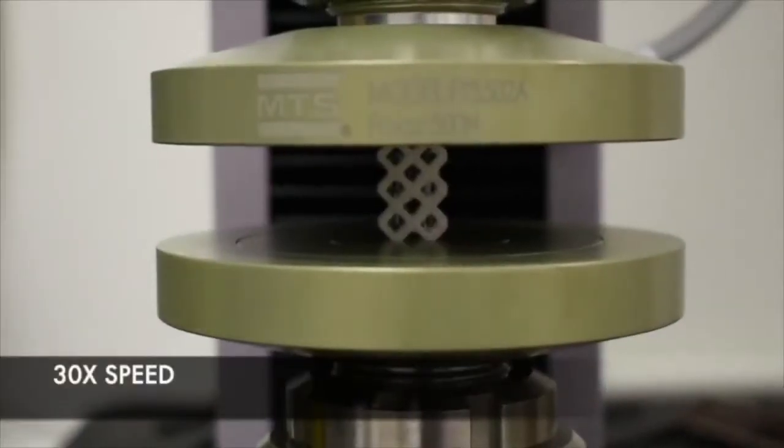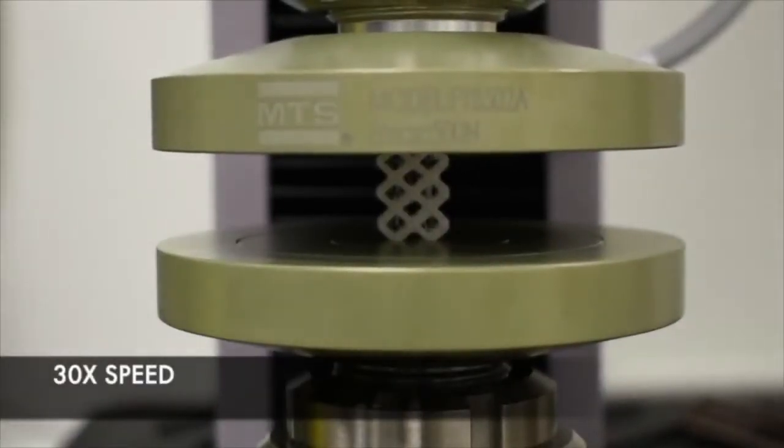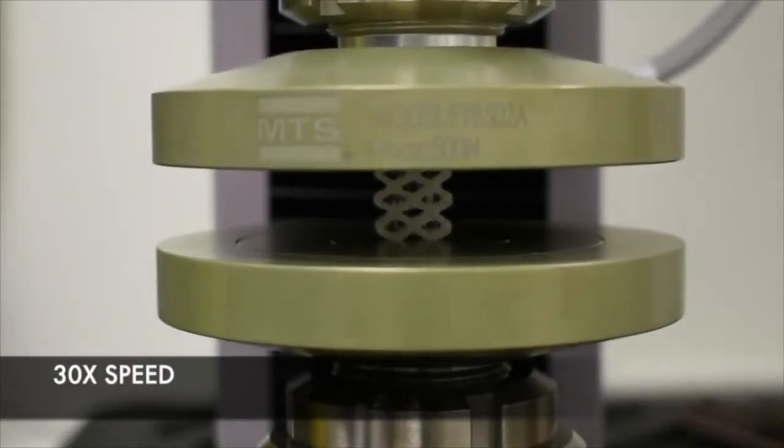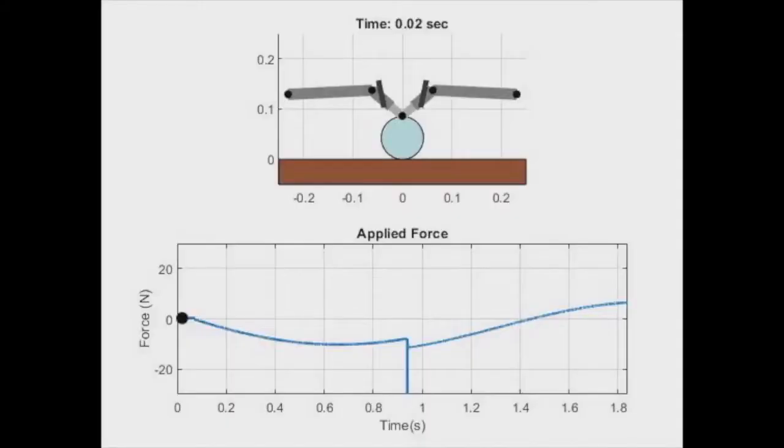The bistable mechanism is 3D printed from flexible TPU filament using a specific infill pattern to achieve stiffness of the desired value. We model the dynamics of the gripping mechanism as a hybrid dynamic system and compute the applied force needed to cause snap-through.